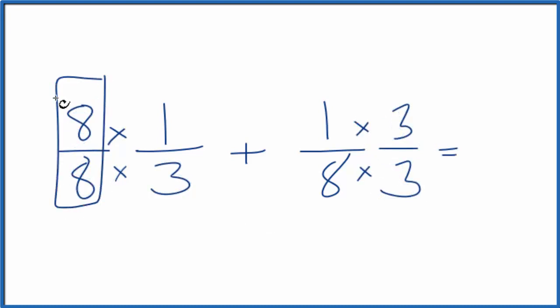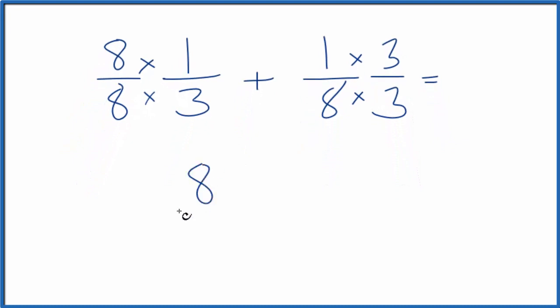Eight over eight, that's just one. Divide eight by eight, you get one. So we're really not changing anything over here either. But now, eight times one, that's eight. Eight times three is twenty-four, plus one times three is three. Eight times three, that's twenty-four again.